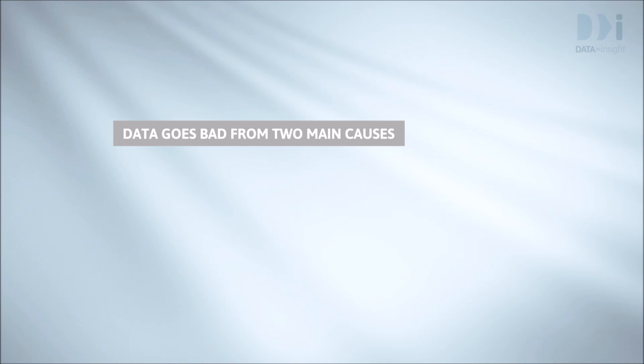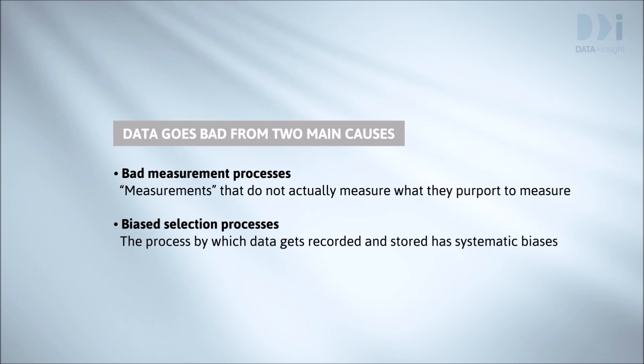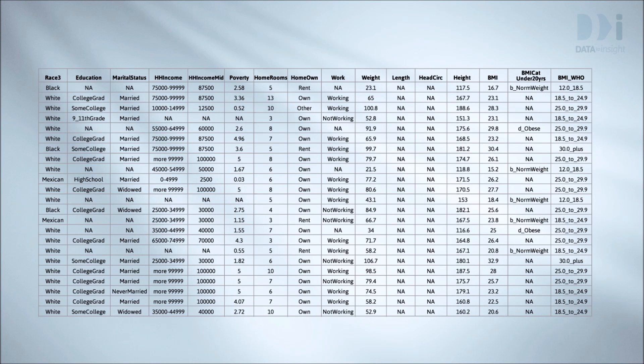Data goes bad from two main causes. Bad measurement processes – measurements that do not actually measure what they are meant to. And bias – the process by which some things get recorded while others don't can cause systematic biases. Additionally, all sorts of things can go wrong when data is being entered and moved around on computers. Real data is also full of holes – values that are missing for various reasons. If the people we have values for tend to be different from those whose values have gone missing, then we automatically have bias.